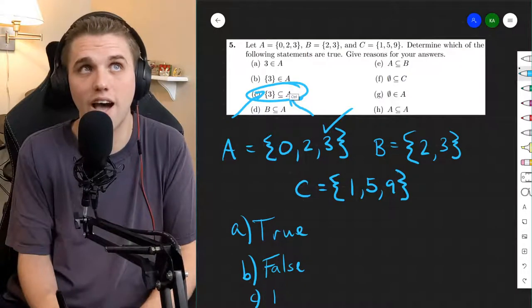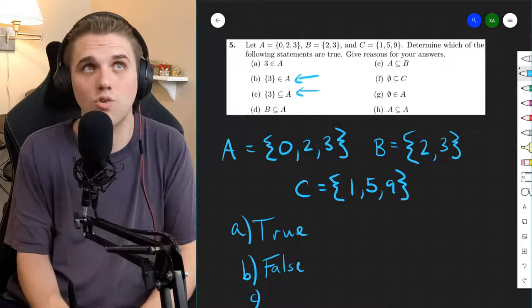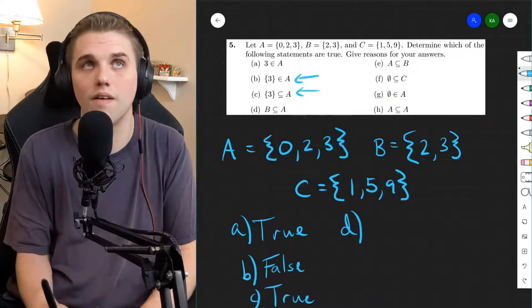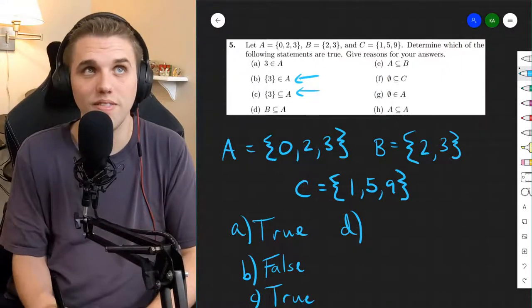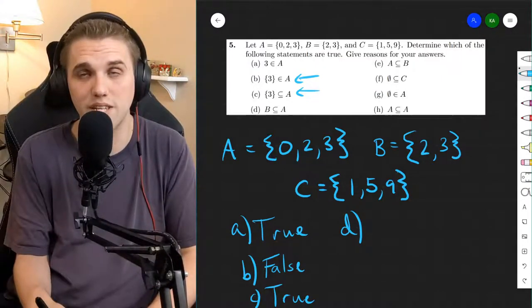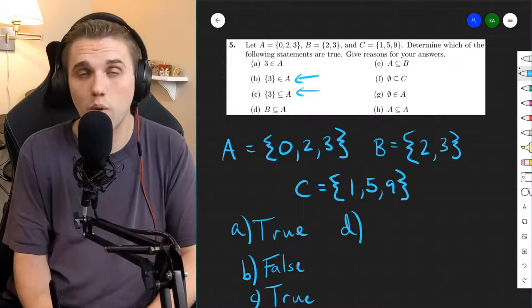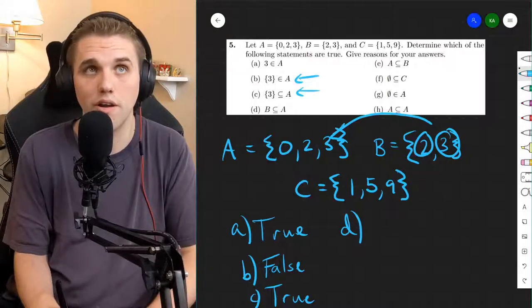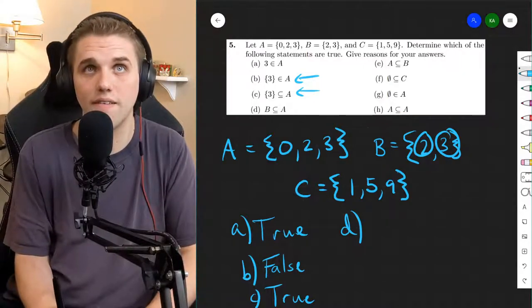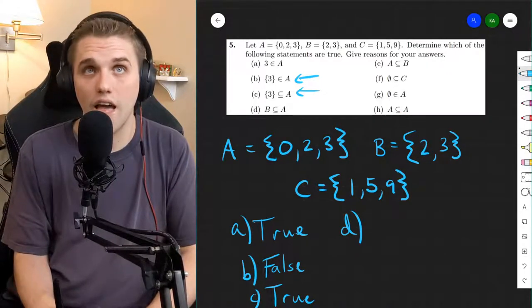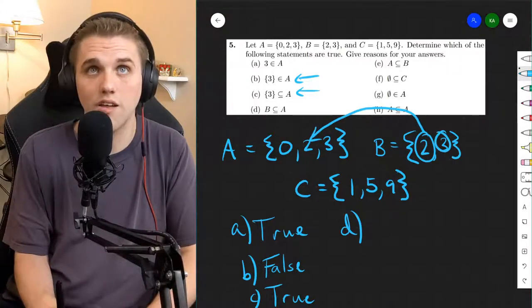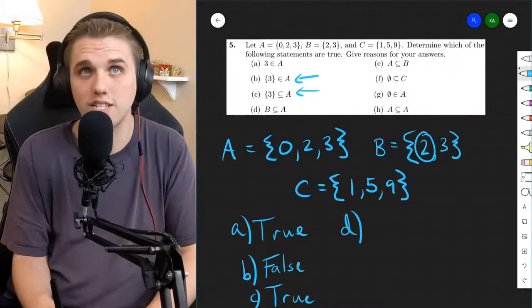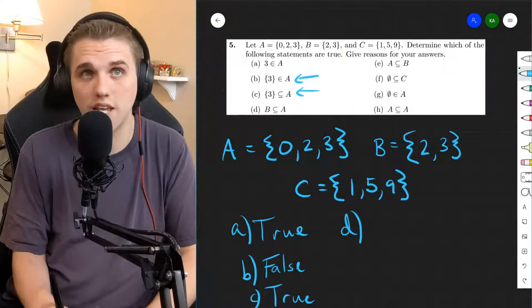And notice how the answers to these two questions are different. Let's do part D. Is B a subset of A? Well, the only way we would know that is if every member in B is also a member in A. And that is the case. Two is in A and three is in A. And so every object in B is also an object in A. This is true.